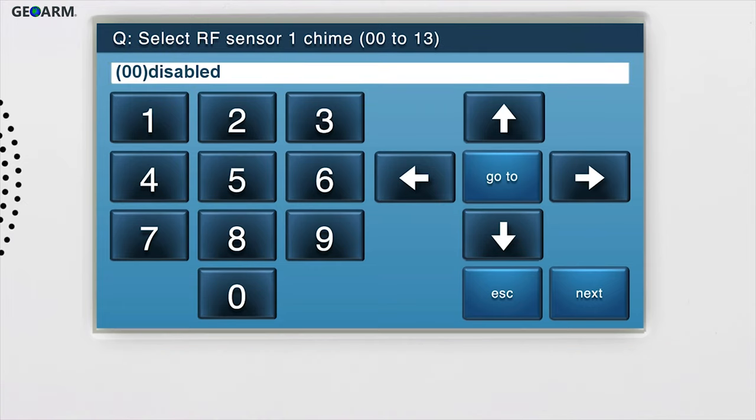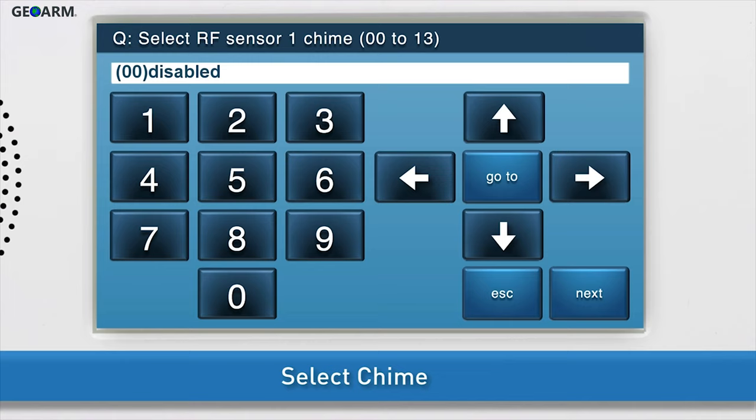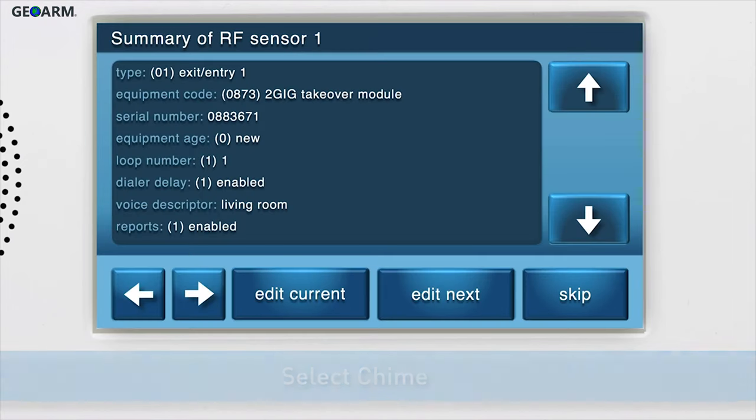Lastly, the panel can be made to enunciate sensor names by selecting a chime. Use the right arrow to scroll through the list of chime options. Once the desired option displays in the answer box, press the down arrow to go to the summary page.